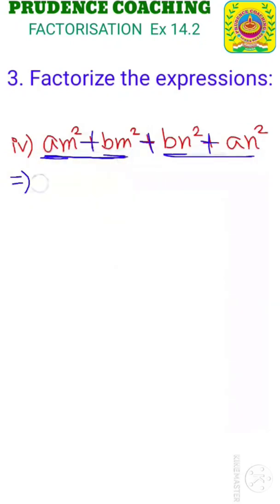Here in the first 2 terms as you can see m² is common. So take m² common from first 2 terms. In the first term you will be left with a plus in the second term b. Close the bracket.